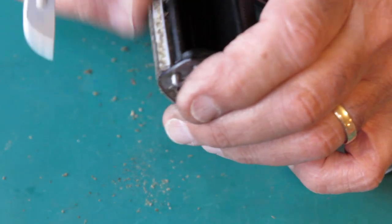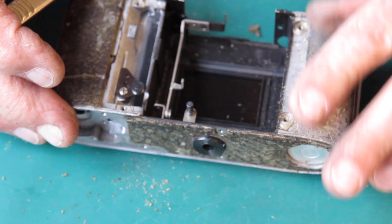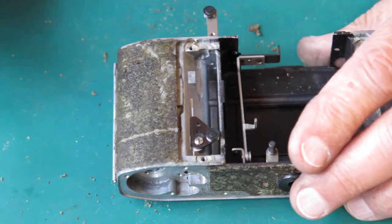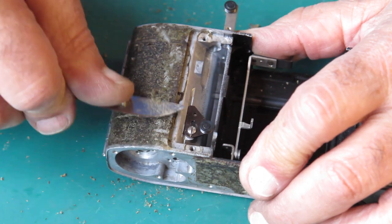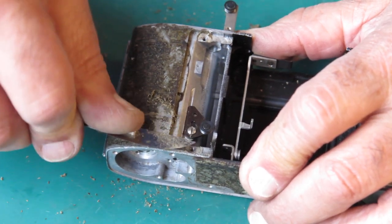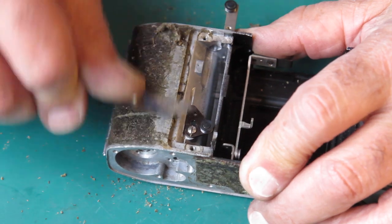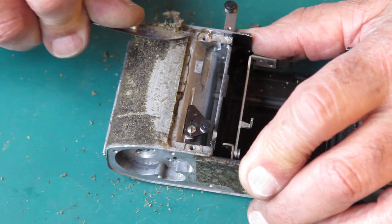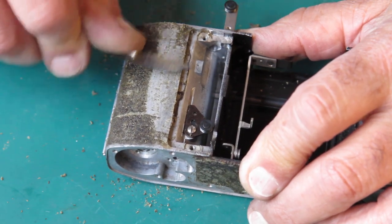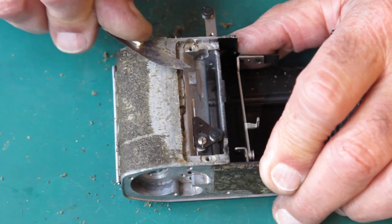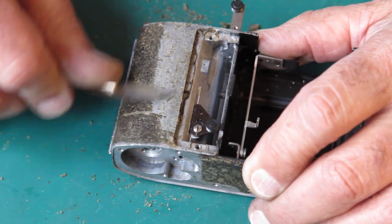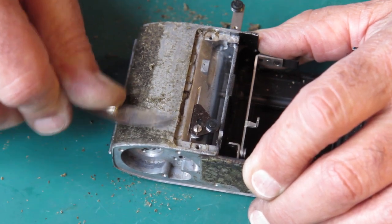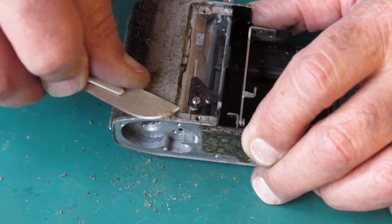On that chrome brass trim there, that'll probably come off with solvent quite well. I'm not going to scrape at that. Let's do this side.